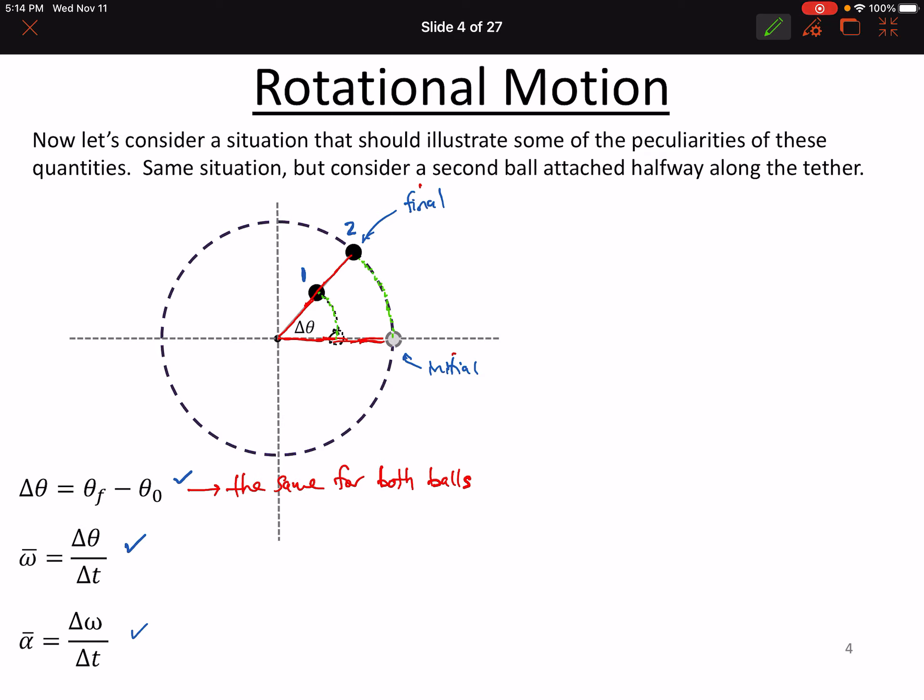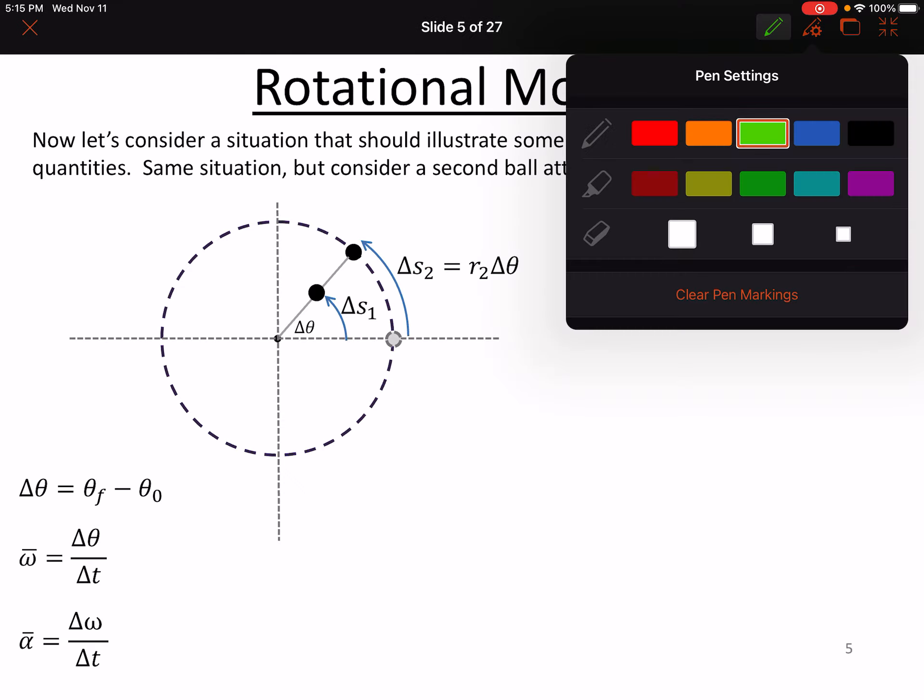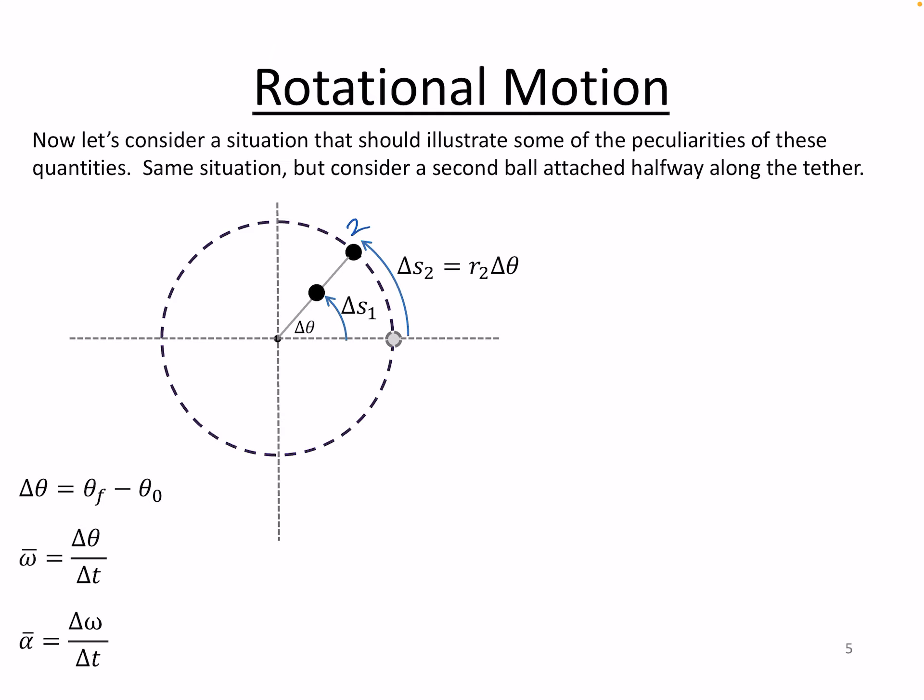So if we put that in our diagram a little more formally here, we call ball number two's displacement delta S2, and ball number one's displacement delta S1. Delta S1, by the way, has the same equation form, just dependent on how far it is away from the center versus how far number two is away from the center.